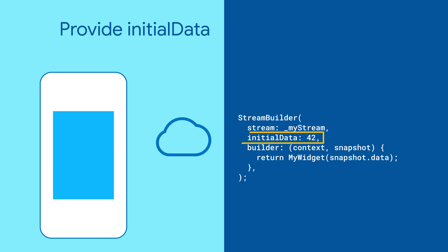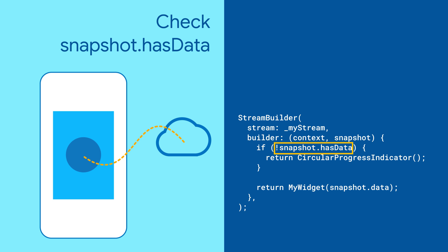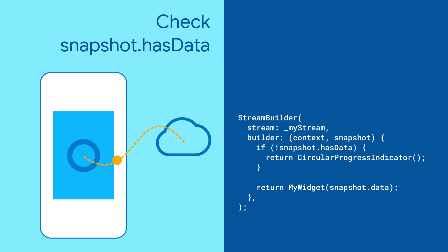You can provide initial data, so that your widget has something to show while it's waiting for the first event. Otherwise, make sure you're checking if the snapshot has data. If it doesn't yet, you can show a loading indicator.